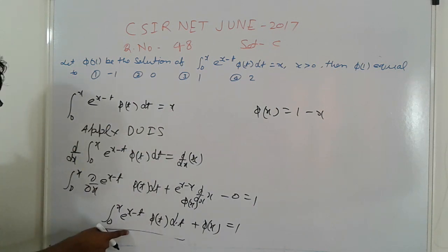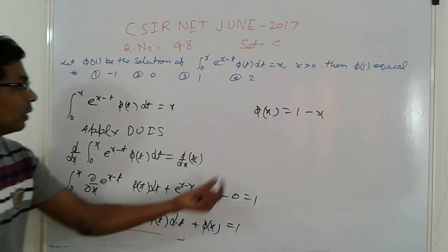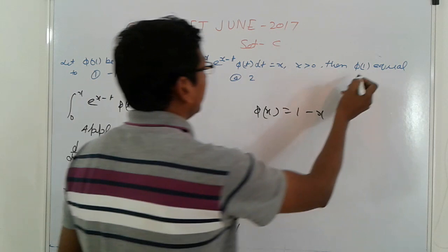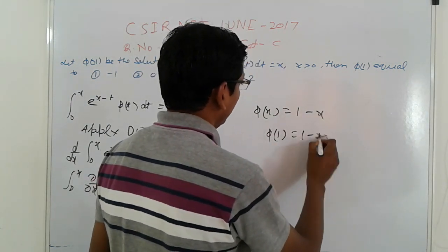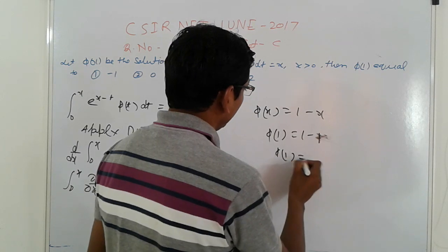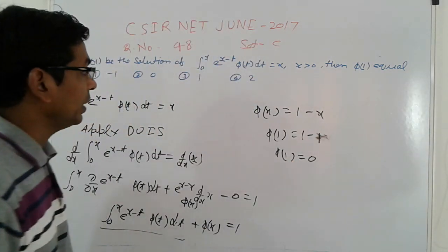Next, find φ(1). So φ(1) = 1 - 1 = 0. That is the first method.